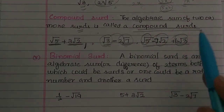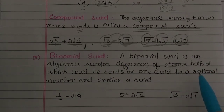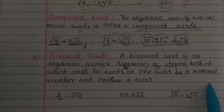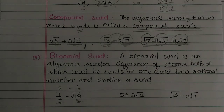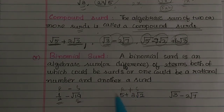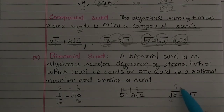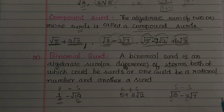A binomial surd has exactly two terms. The two terms could both be surds, or one could be a rational number and the other a surd. For example, root 3 minus 2 root 7 has two surd terms and is therefore a binomial surd — the two terms are combined by subtraction, making it a binomial surd.